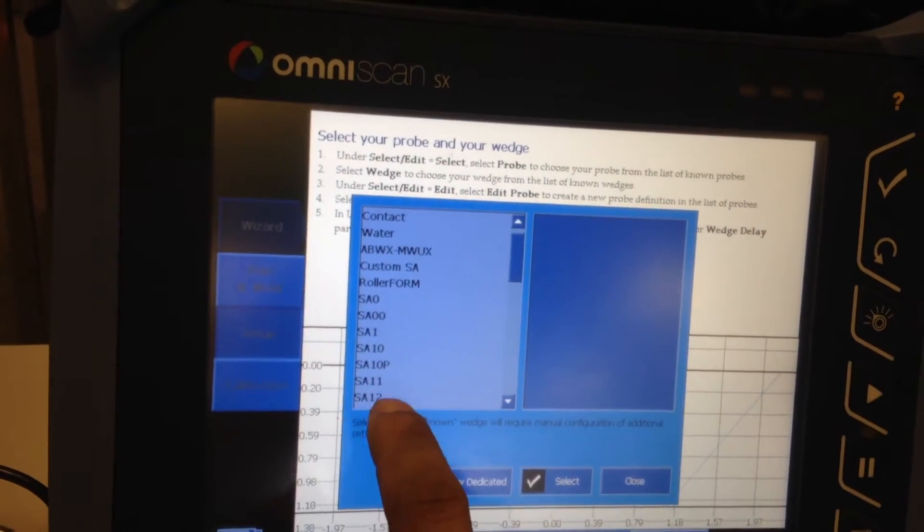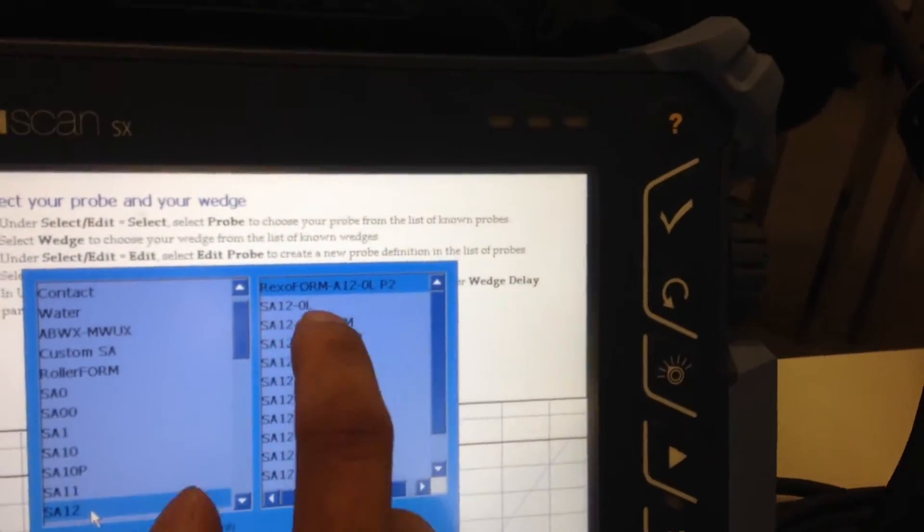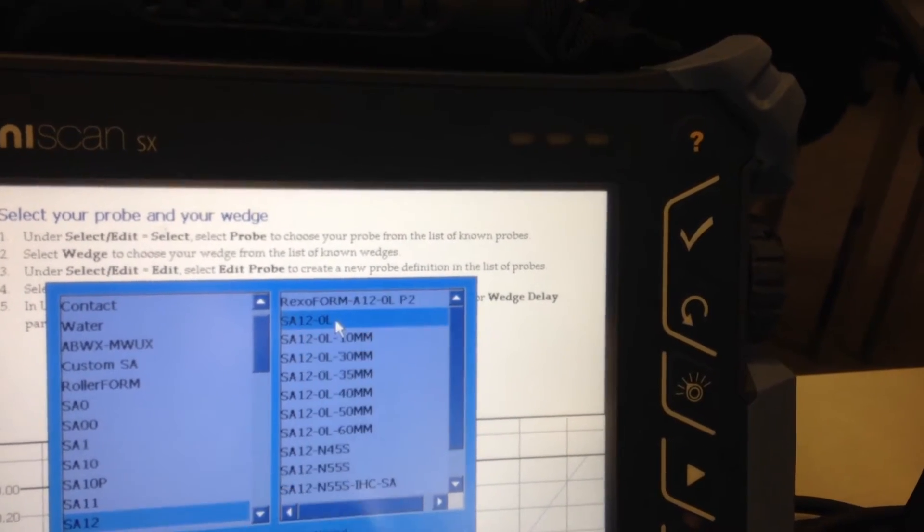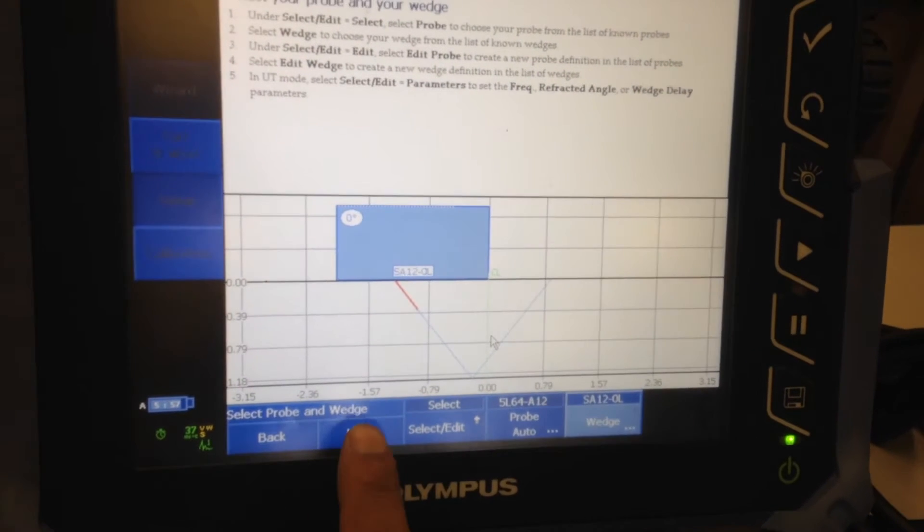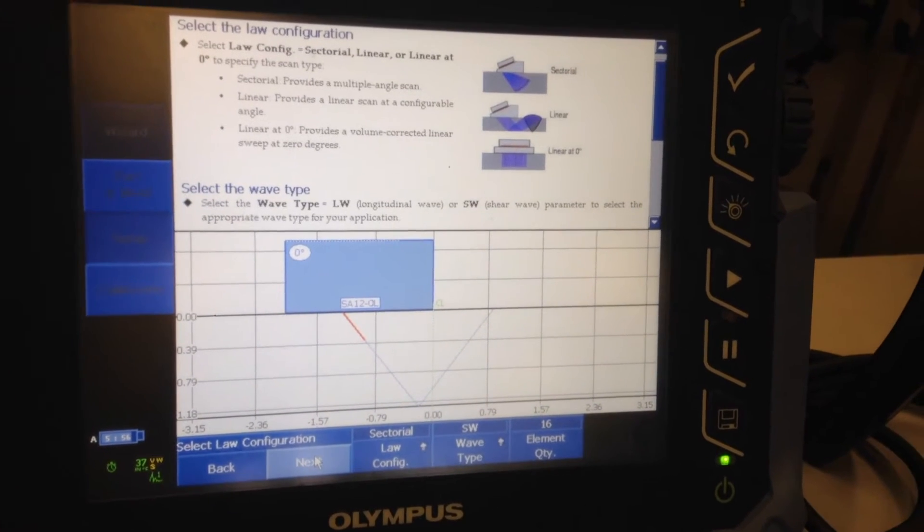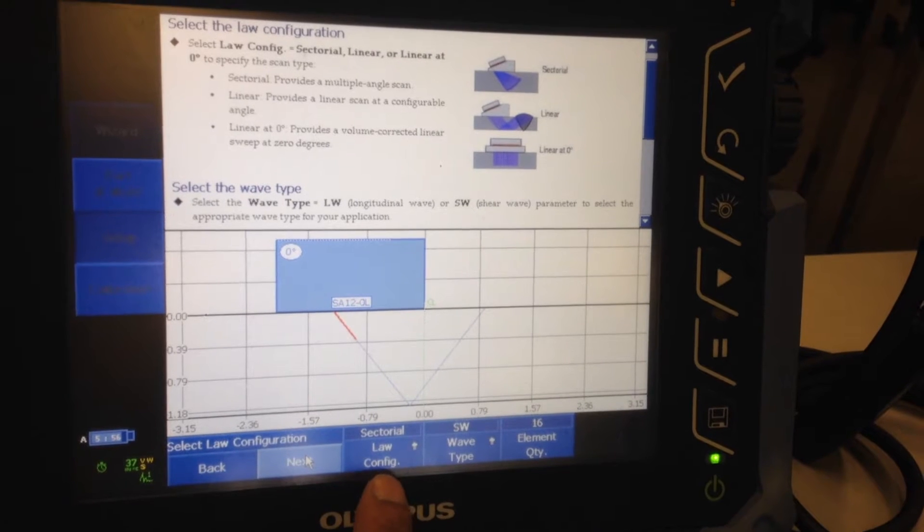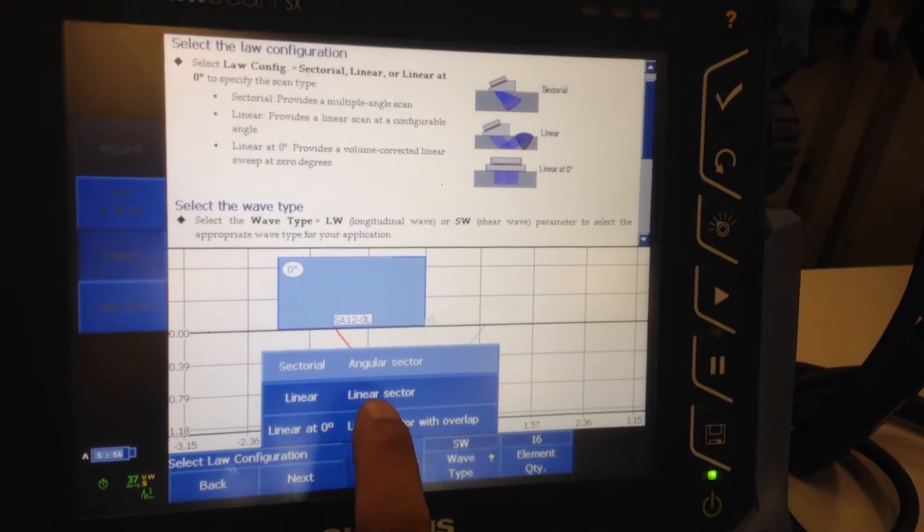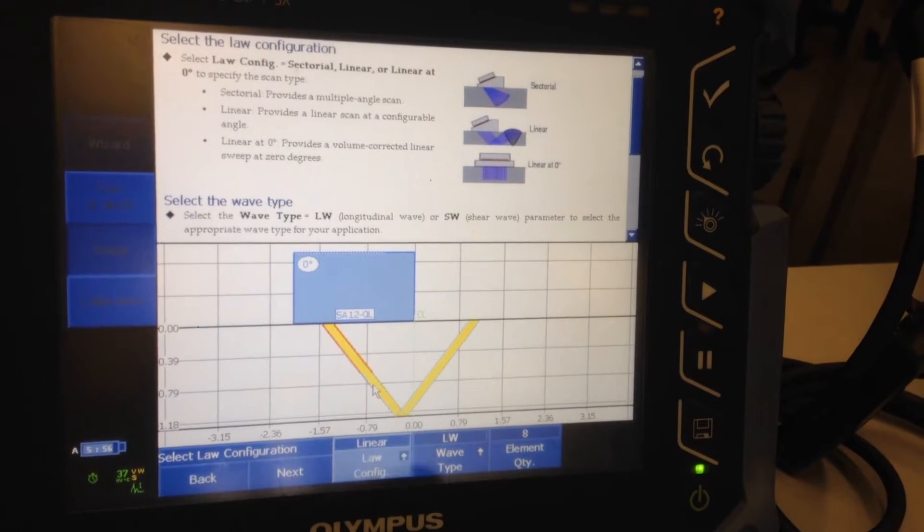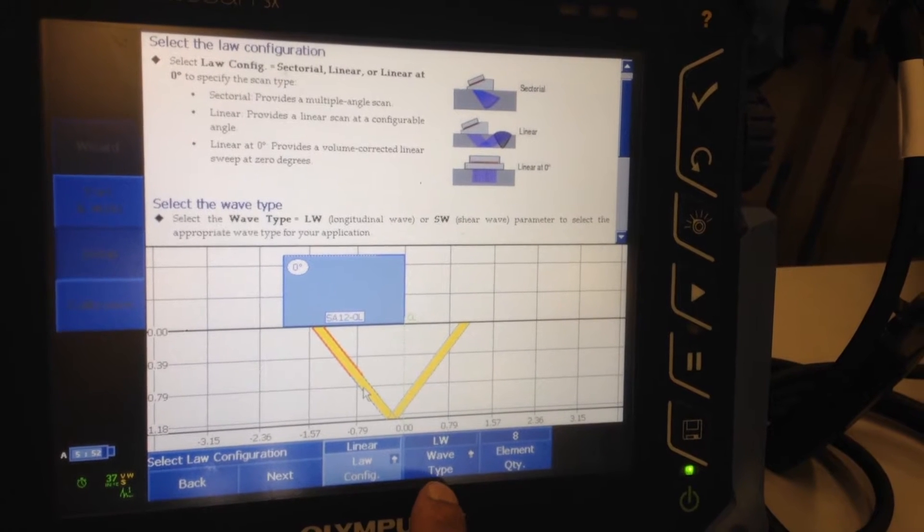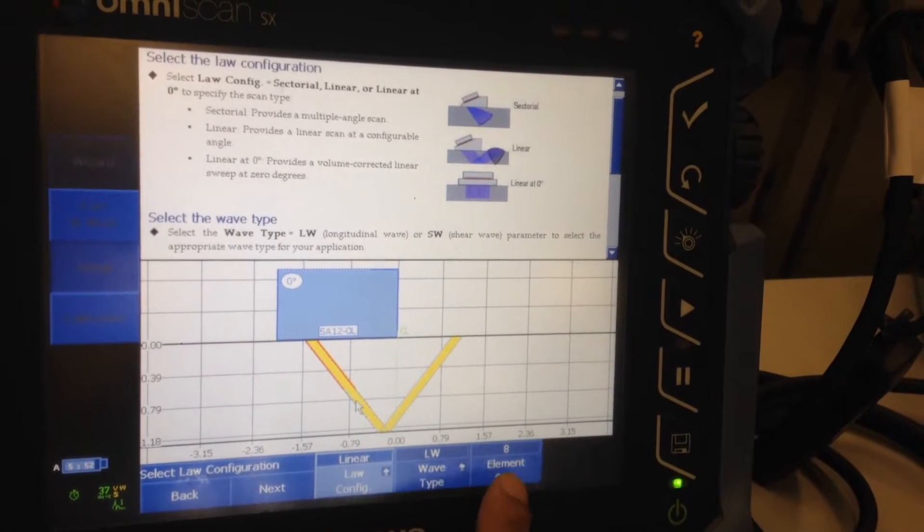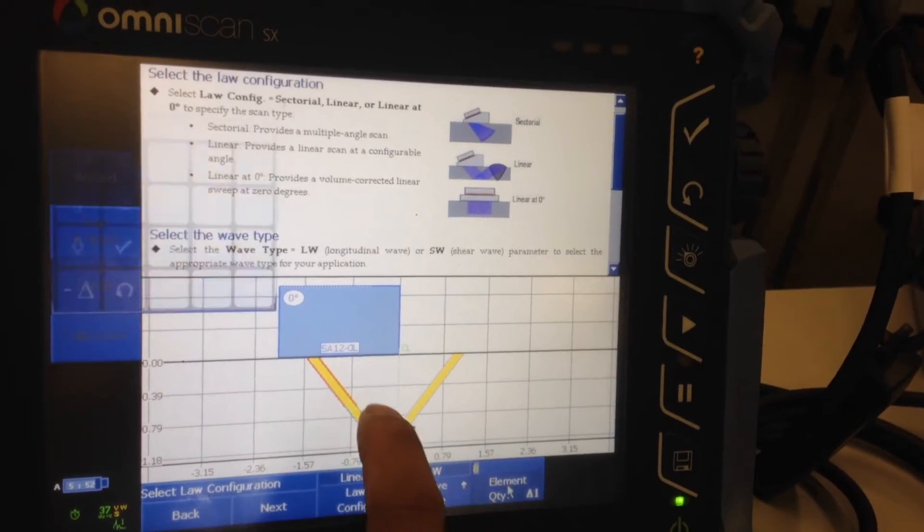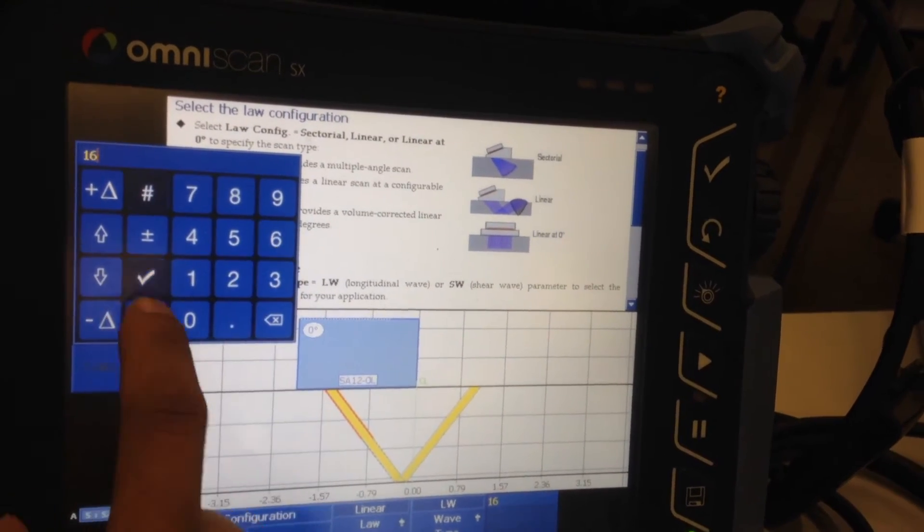Log configuration, leave it on linear. Sector type of wave longitudinal. Element quantity is eight. I can use the maximum allowed by my instrument, which in this case has 16 pulsars, so I keep my element quantity on 16. Click next.